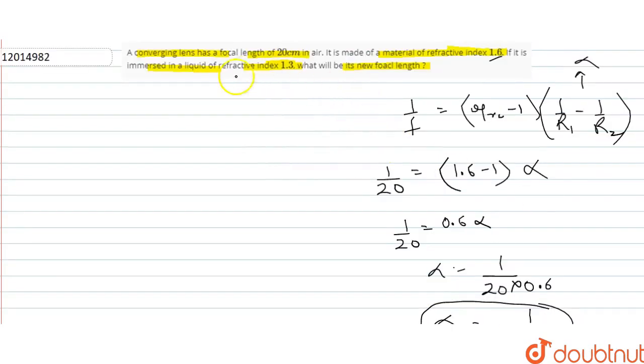So 1 divided by 20 is equal to 0.6 times alpha. Now mu relative is 1.6 divided by 1.3 minus 1, into alpha.